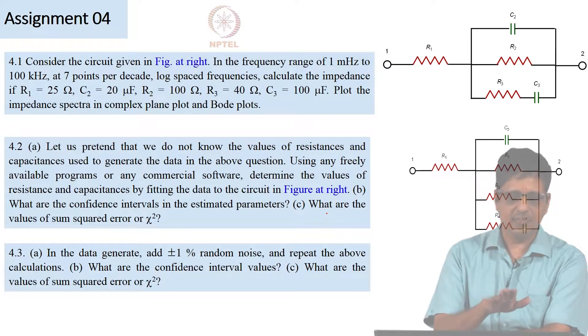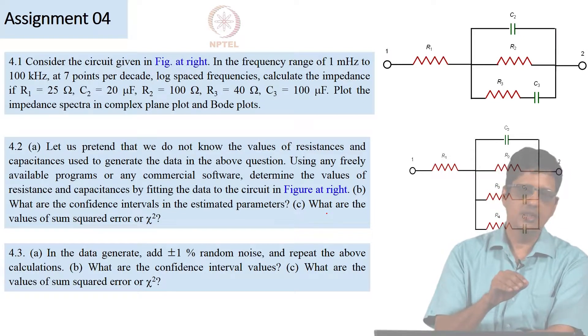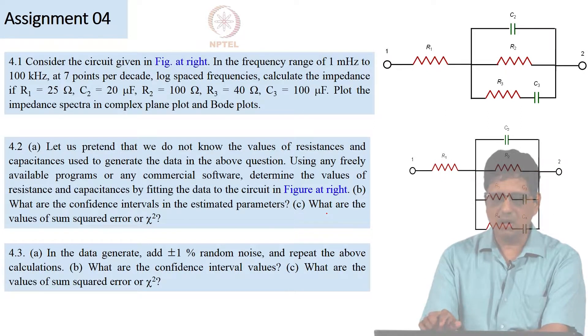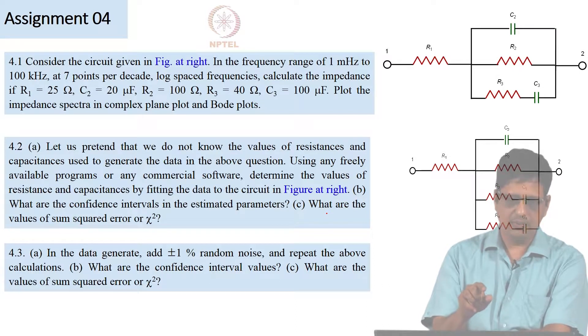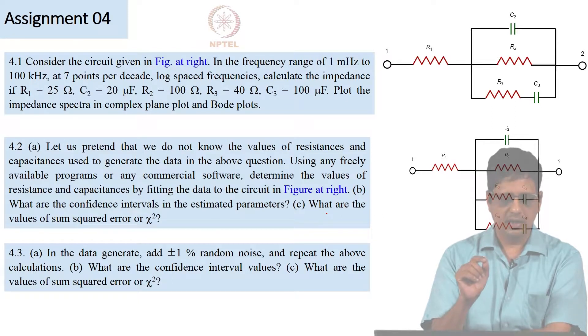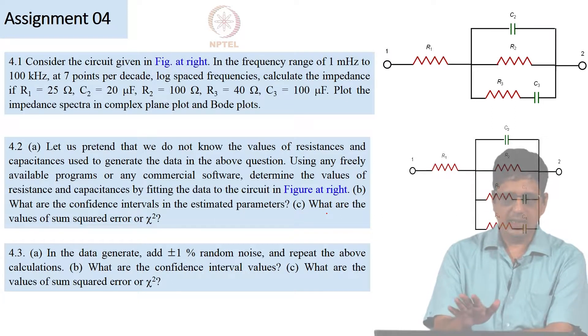It is clean data, you should not have any difficulty in getting these values. When you get these, you should also look at the confidence intervals in the data, in the best fit parameter values. For example, if R1, you get the value of R1, do you get it as 25 ohms plus or minus 0 ohm, or is it 25 ohm plus or minus 100 ohm, 25 ohm plus or minus 5 ohm? All these things make a difference. Similarly, what is the chi-square value? In this case, you should actually get 0 error, and within round-off error, you should get very little chi-square value because it is clean data.